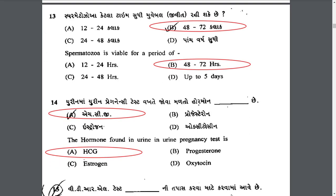In urine pregnancy test, which hormone is found in urine? The hormone found in urine in a urine pregnancy test is HCG — human chorionic gonadotropin.